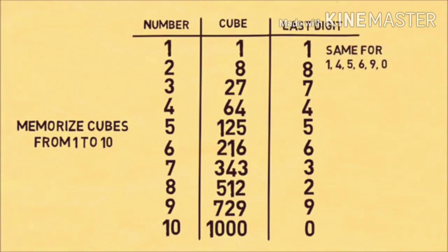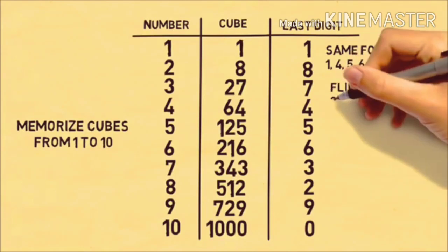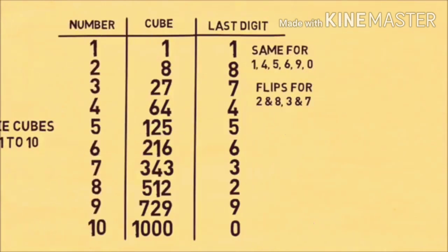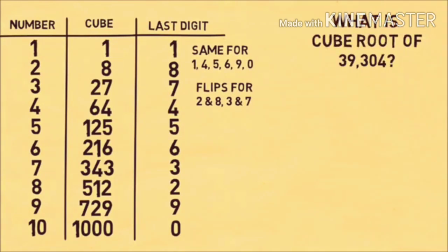An easy way to remember this is that for the numbers 1, 4, 5, 6, 9, and 0, the last digit is the same as the number. For the numbers 2 and 8, and 3 and 7, the last digit flips. So the last digit for 2 is 8, and the last digit for 3 is 7, and vice versa.